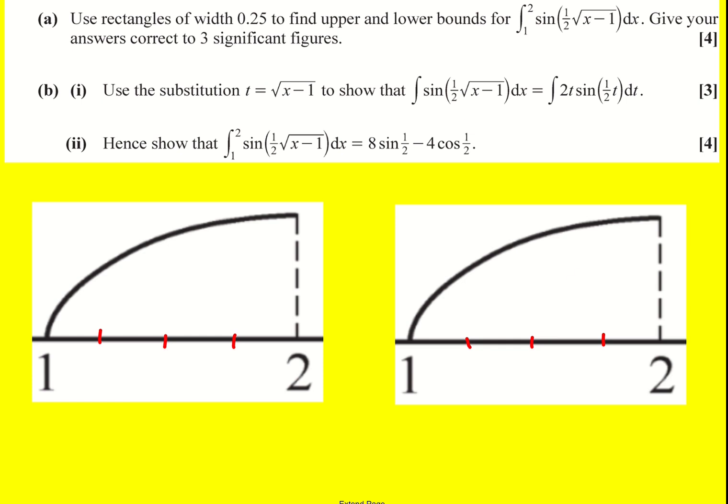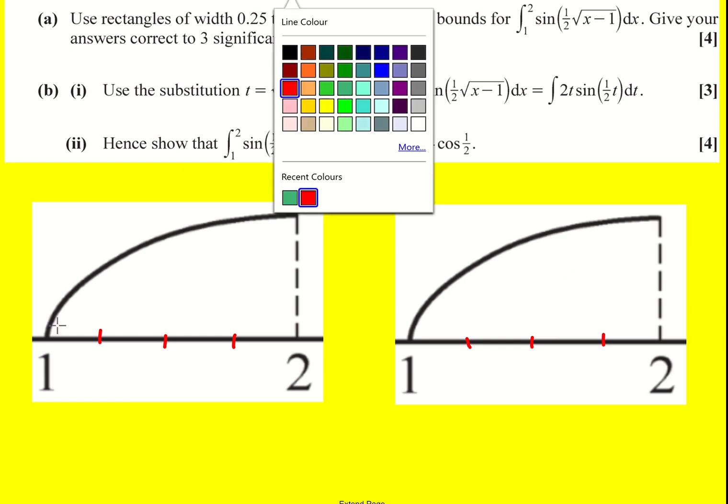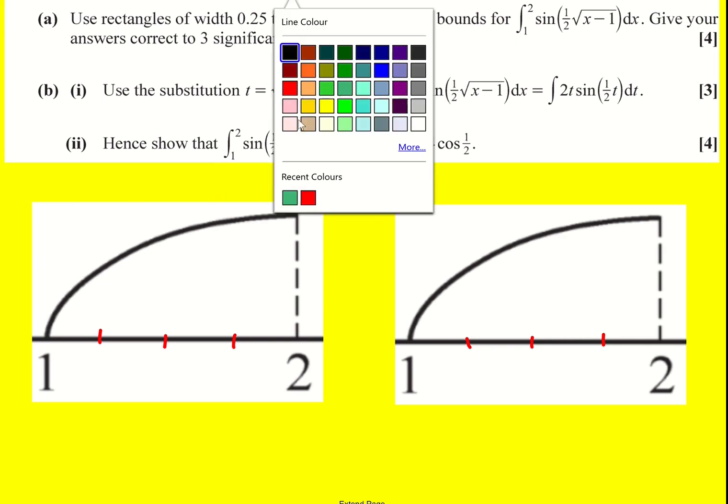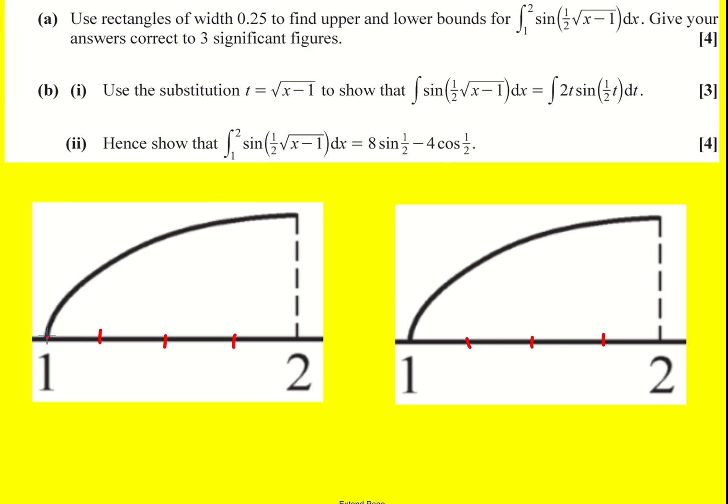Now there's two different types of sum that we can make. We can make a left hand sum which is when we use the left point of the function to be the height of the rectangle. On this first one the first rectangle is going to be zero and then it's going to jump up to here. What we can see is we are underestimating the curve. This is going to give me a lower bound.